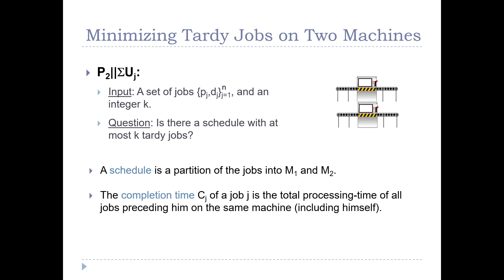In a given schedule, the completion time of a job cj is the total processing time of all jobs preceding it on the same machine, including itself. A job is tardy if its completion time is greater than its due date, i.e., if dj is smaller than cj.